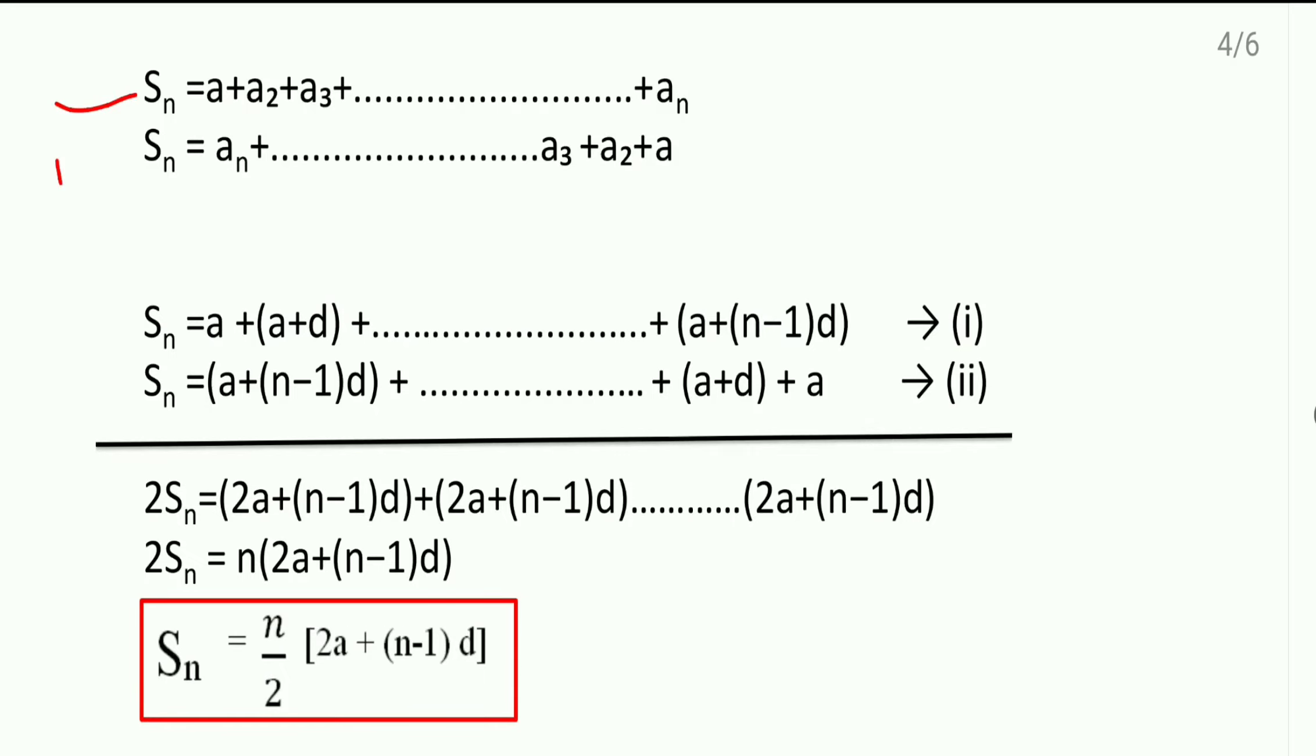In the second case, the same thing we have written just in the reverse order. Sum of n terms equal to first term is a, second term is a plus d and nth term is a plus (n-1) into d.